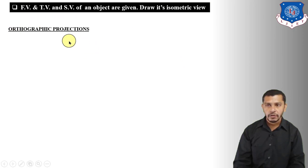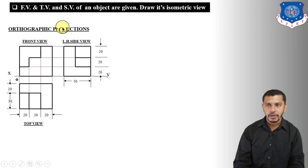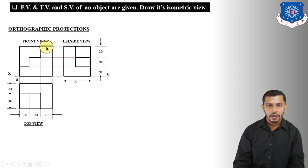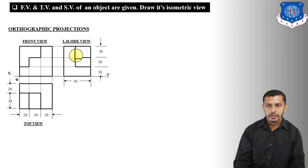The orthographic projections of the object are given — the front view, the top view, and the side of the object. This will be the front view, this will be the top view, and this would be the left hand side view. Using these three views, we will draw the isometric view of this object. The first basic step is to find out the length, width, and height of the object. We will get the length and height from the front view.